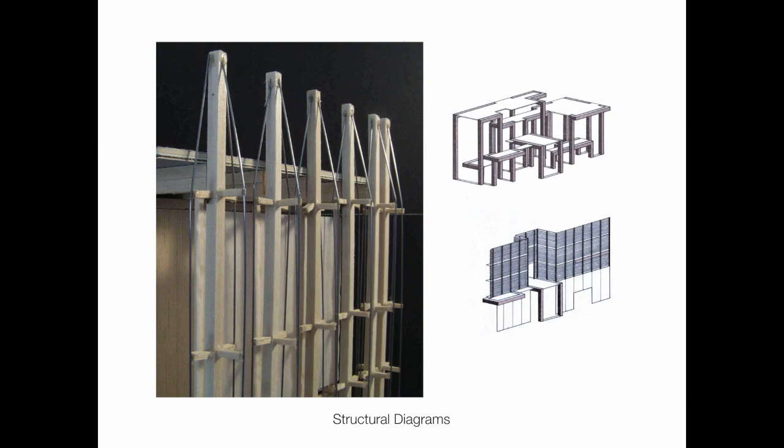This is the Sendai Mediatheque by Toyo Ito. This is his diagram relating to the building. Some of you might be able to read Japanese — I can't, so I can't tell you what any of this says. But just by looking at and analyzing this diagram, I can tell that this particular building has something to do with multiple floors and these twisting mesh-like things that go between the floors. Even though I don't see the building and can't read the language, I have an understanding of what the building's about because the diagram is simple enough to understand.